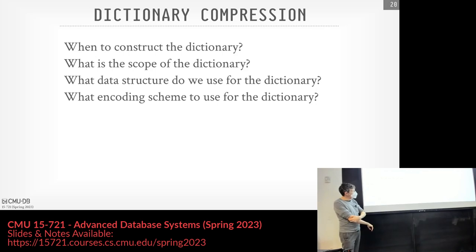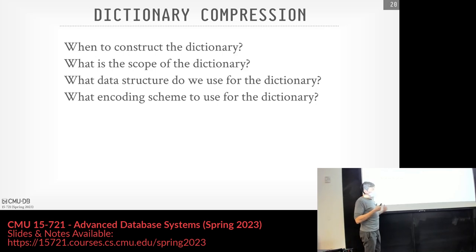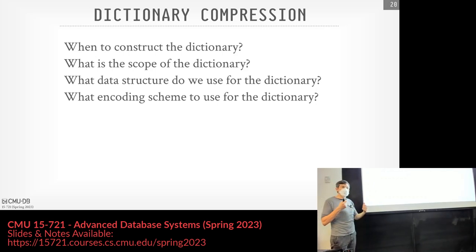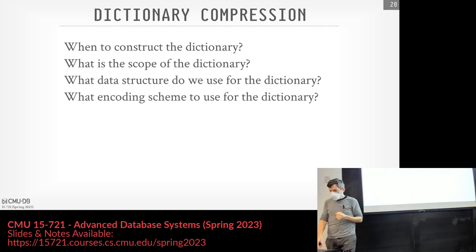For our purposes this semester, we'll assume block-level scope within a single column. In deciding on the dictionary, we need basically two operations: encode and decode. For an uncompressed value, we convert it to compressed form as fast as possible. We need a way to encode predicates into dictionary values so we can operate directly on compressed data. And as we get tuples that match our predicate in the scan operator, we need to decode them quickly.